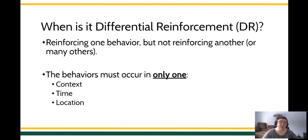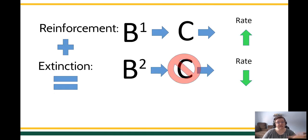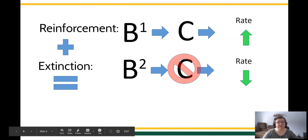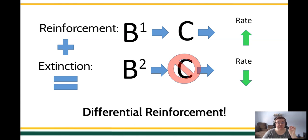That distinction is important because the way you go about teaching them are different. So let's look at some examples. If you see a scenario where one behavior — B1 — is contacting reinforcement, and the rate of that behavior increases, while the other behavior is contacting no reinforcement and the rate of that behavior decreases relative to the other — yes, this is a perfect textbook Miller example of differential reinforcement.